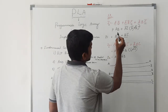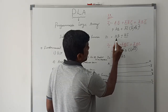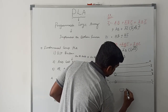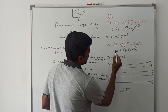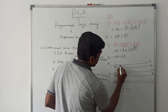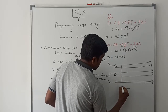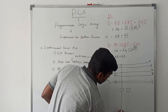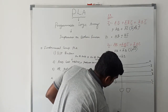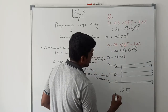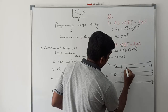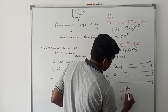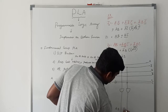Now come to the AND gate. After simplification, Z1 has two product terms, so we need two AND gates. The first product term is A·B, which is the output of the first AND gate. The second product term is A̅·C̅, which is the output of the second AND gate.